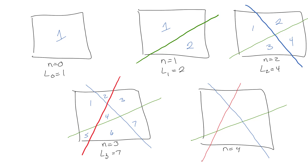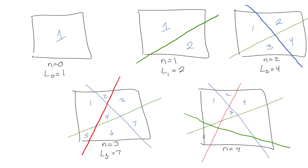Keeping the same cuts and adding one more for n=4, after adjusting the drawing I count one, two, three, four, five, six, seven, eight, nine, ten, eleven — so L(4) = 11. If you didn't get eleven, you did it wrong.